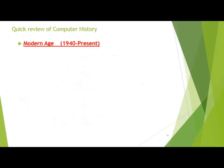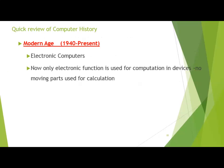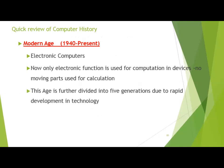Then the Modern Age came, from 1940 to the present, due to the electronic computer. The invention of the vacuum tube made it possible to compute data electronically — now only electronic function is used for computation. No moving parts are used for calculation, so the mechanical or manual function was totally removed from the machine. Electronic functionality made it possible for scientists to continue improvements, and that is why the Modern Age is further divided into five generations.